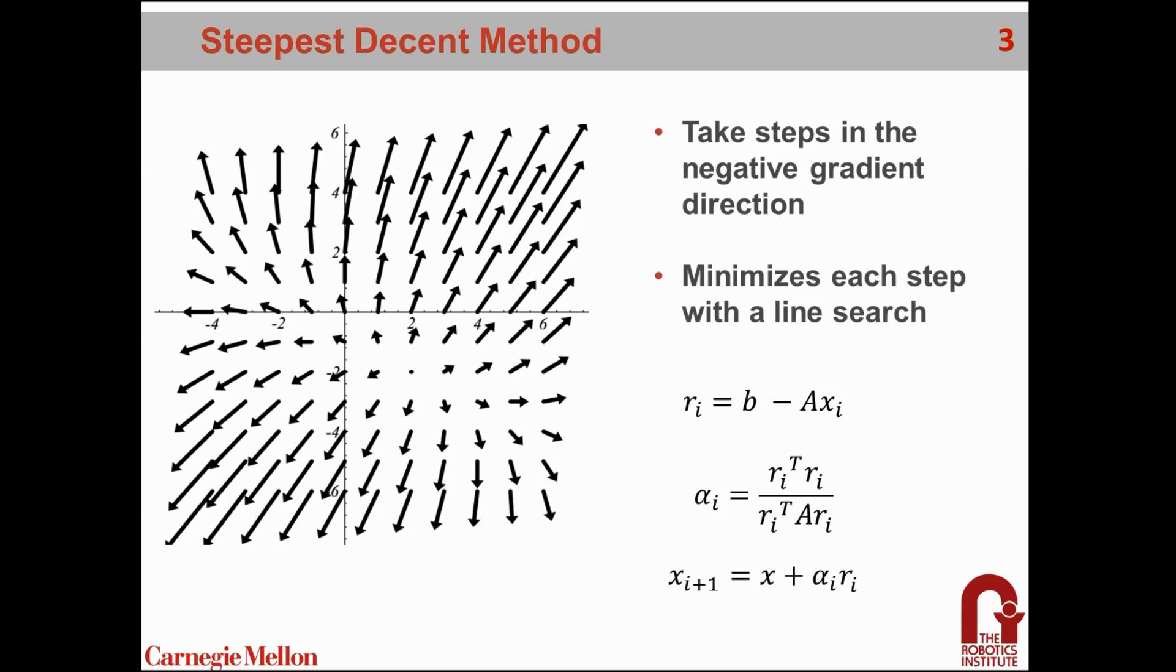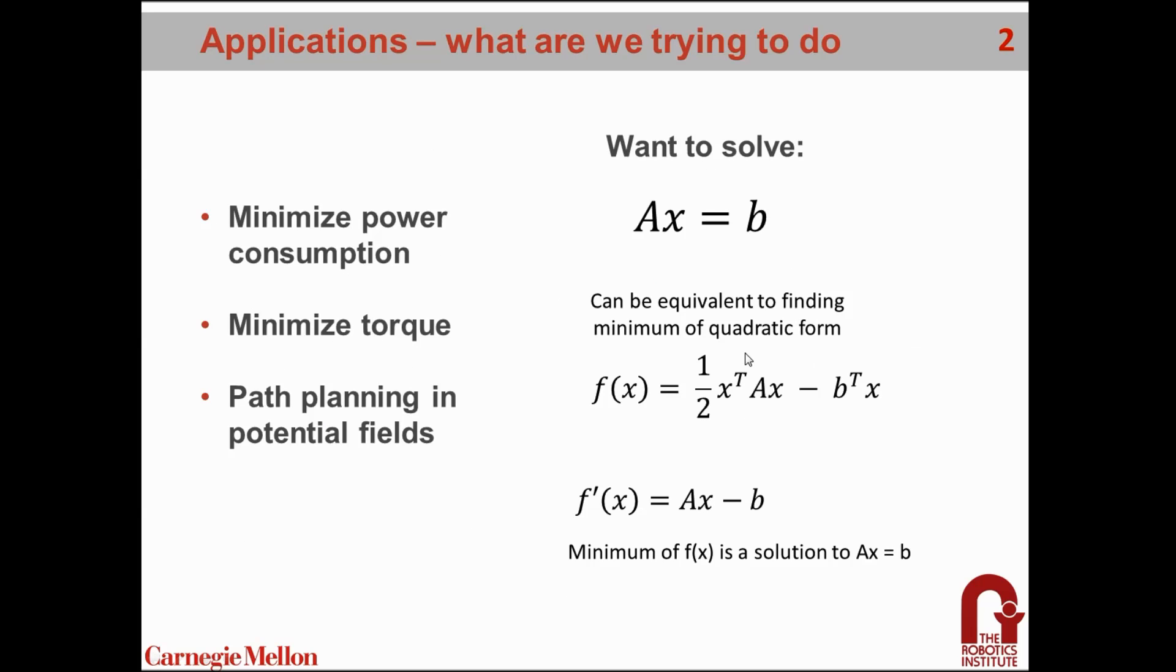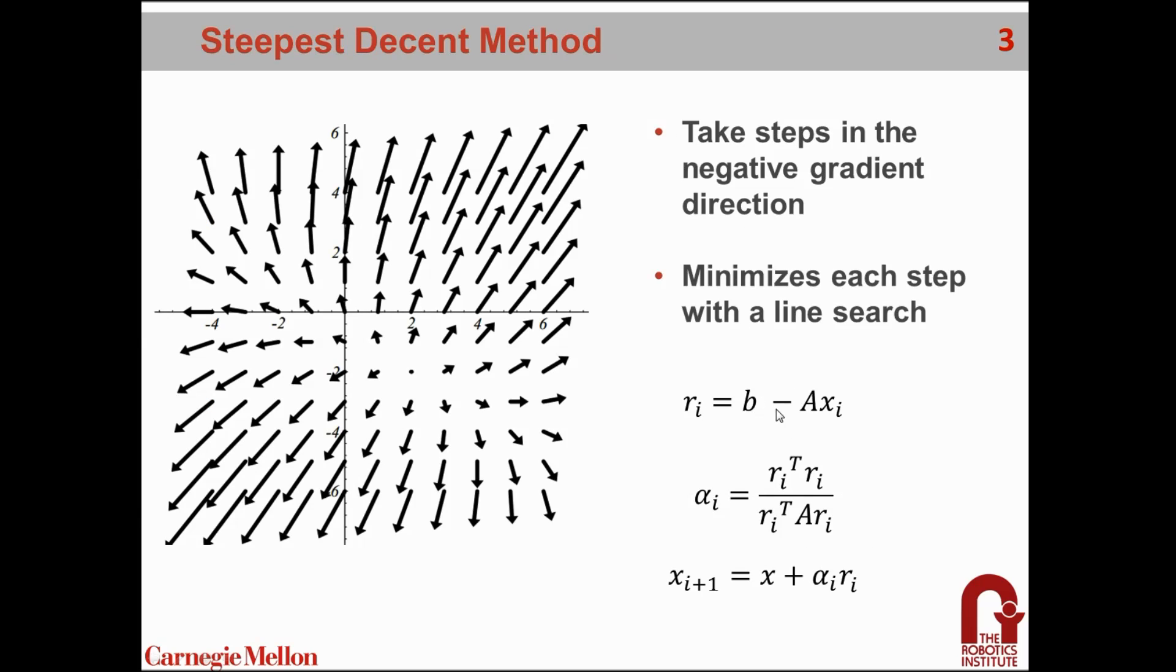Starting with a little background, we're reviewing the steepest descent method, which is a precursor optimization algorithm to Conjugate Gradient. It's a pretty simple and effective method. It starts by taking some guess of x and then finding the gradient at that point. We saw from the previous slide that the derivative of the quadratic function is ax minus b, and the negative of that is just b minus ax. We'll call that the residual r, which is also the gradient, and that's the vector pointing in the direction of steepest descent.